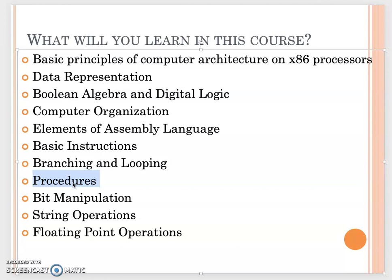In assembly language, like functions in C++ or methods in Java, we call reusable code blocks 'procedures' — same concept but different syntax. Continuing with chapters six through nine after the midterm, we will cover advanced procedures, bit manipulation (since assembly lets us directly access bits in a byte), string operations, and floating-point operations.